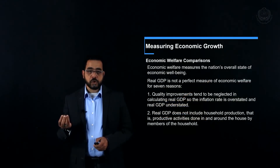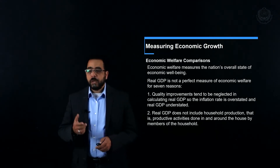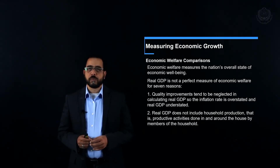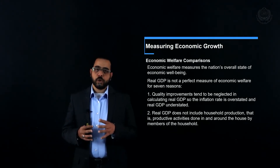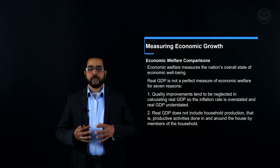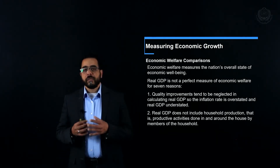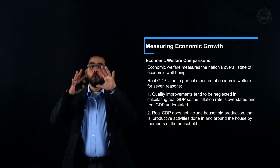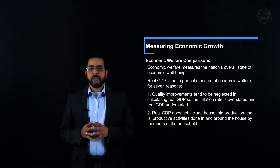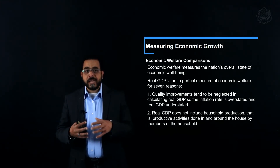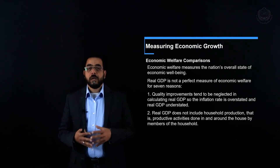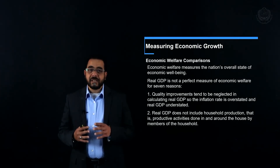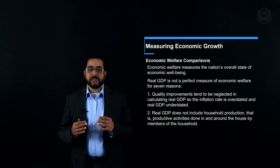Real GDP also has another defect: it doesn't include household production. Household production is production that takes place at home, like family members helping each other — mom cooking, dad helping kids study. By definition these activities fall under GDP as goods and services produced within the country, but since they don't go through markets we don't know their value. Some estimates put household production in Egypt at about 15% of GDP, uncalculated because it has no cash value.